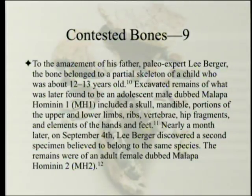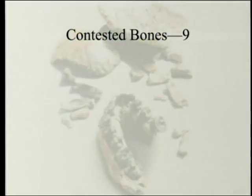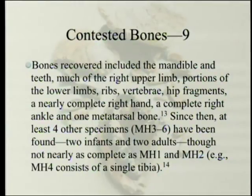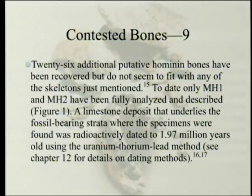Nearly a month later, on September 4th, Lee Berger discovered a second specimen belonging to the same species. The remains were of an adult female, dubbed Malapa Hominin 2 (MH2). Bones recovered included the mandible and teeth, much of the right upper limb, portions of the lower limbs, ribs, vertebrae, hip fragments, and a nearly complete right hand and complete right ankle. Since then, at least four other specimens (MH3 to MH6) have been found — two infants and two adults — though not nearly as complete. MH4 consists of a single tibia. To date, only MH1 and MH2 have been fully analyzed.